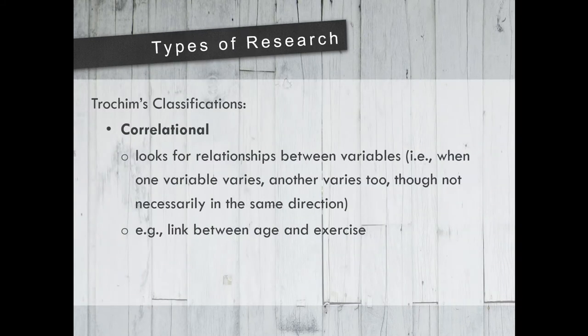The second type of research is correlational. This research looks for a relationship between variables. When one variable varies or changes, another varies or changes too, though not necessarily in the same direction. An example of a correlational topic is the link between age and exercise. Do younger people tend to exercise more than older people? The older we get, does that mean we exercise less? Is there a relationship? That is correlational.